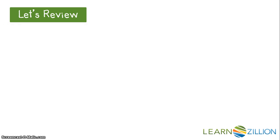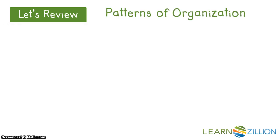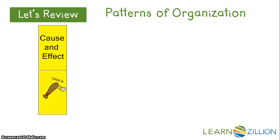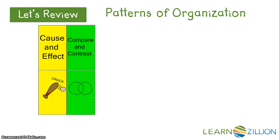One type of text structure is pattern of organization. There are seven common patterns used in writing. One pattern is cause and effect — the cause is typically discussed first, then the effects are discussed. Another pattern of organization is compare and contrast, where an author shows the similarities and differences between two items or ideas.